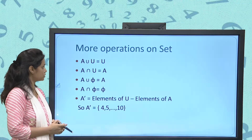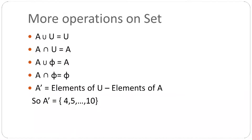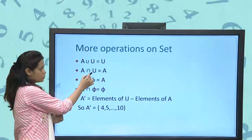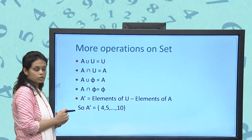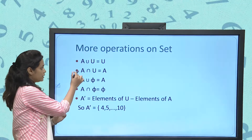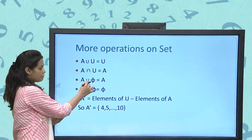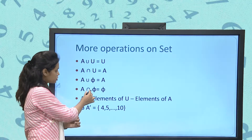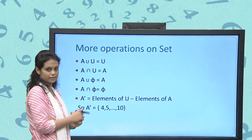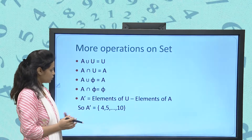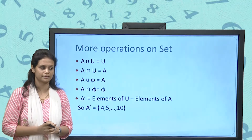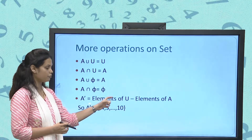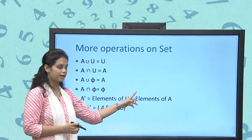Some more set operations: A ∪ U is always U, since U covers all elements including those in A. A ∩ U is always A. A ∪ φ is A, since φ is the null set. A ∩ φ is φ. The complement A' consists of the elements present in the universal set but not in A.